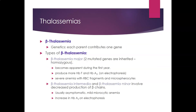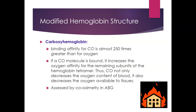For beta thalassemia, each parent contributes one gene, giving two beta genes total. Beta thalassemia major involves two mutated inherited genes (homozygous); it becomes apparent during the first year of life, with increased hemoglobin F and hemoglobin A2 on electrophoresis, and severe anemia with red cell fragments and microspherocytes. Beta thalassemia intermediate and minor involve decreased beta chain production; they are usually asymptomatic with mild microcytic anemia and an increased hemoglobin A2 on electrophoresis.